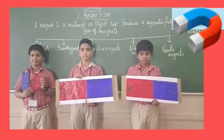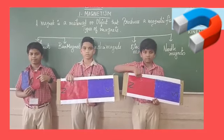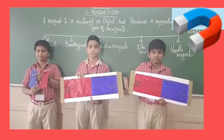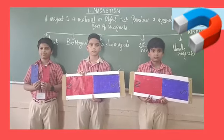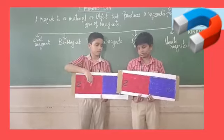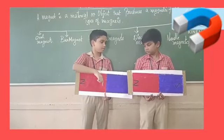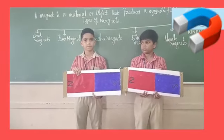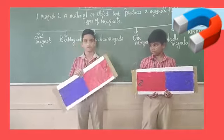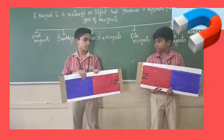A magnet has two poles. They are the north pole and the south pole. The opposite, unlike poles will attract. But the like poles will not attract — they will repel.